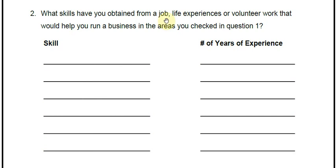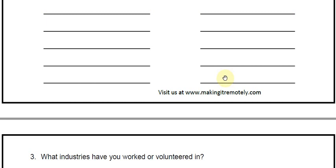Think about things you've even been interested in — maybe you've dilly-dallied in floral arrangement, or if you've dabbled in certain things over the years and haven't had time to really sit down and work on it, think about those things as well. Maybe you have an interest in making jewelry or photography but haven't actually done it. In that case, you could write down that skill and say beginner, because that's something you might want to get into but haven't done yet.